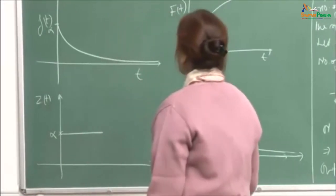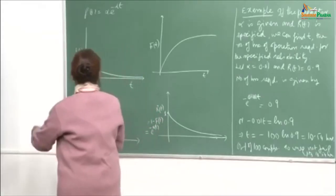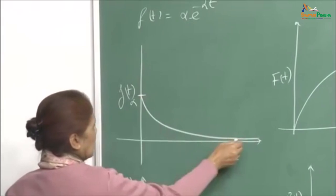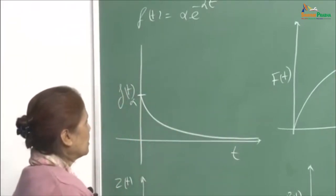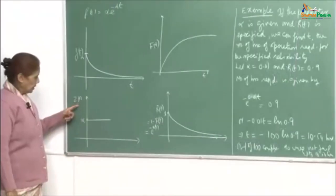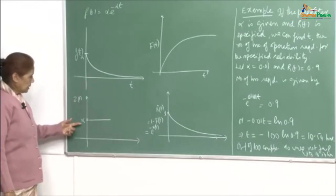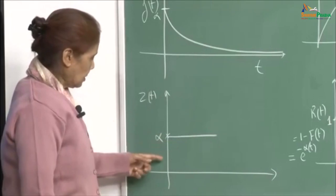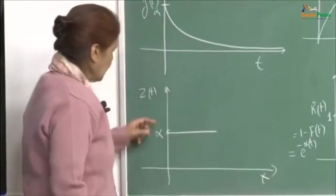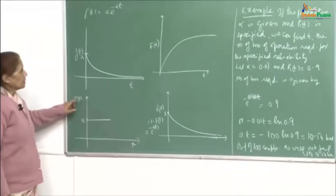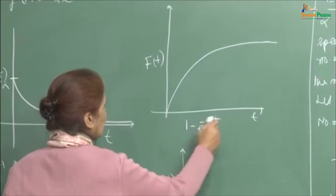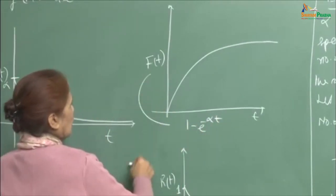Let us look at the various graphs connected with the exponential failure law. At t equal to 0 the pdf f(t) equals alpha, and then it goes down as t goes to infinity. The failure rate z(t) is the constant alpha for all values of t. The CDF F(t) equals 1 minus e raised to minus alpha t: at t equal to 0 this is 0, and then it goes up to 1.